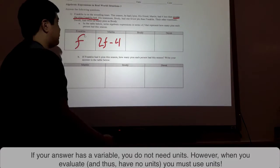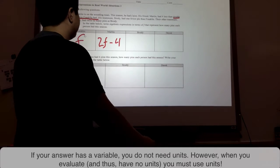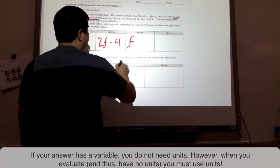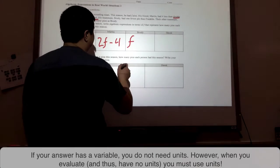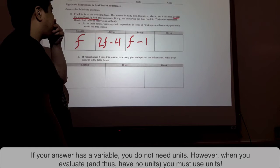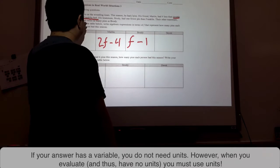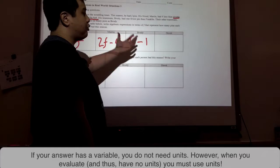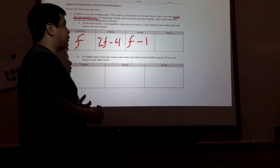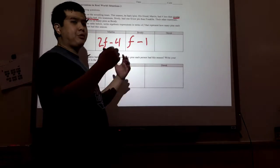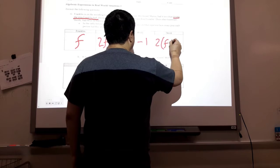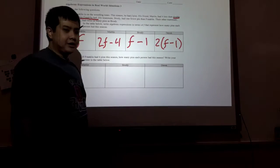Next, it says that Brody had one fewer pin than Franklin. So we go back to Franklin — Franklin had F. Therefore Brody had one fewer pin, which means F minus 1. Their other teammate Derek had twice as many pins as Brody, so we're going to multiply Brody's expression by 2. Remember, when we're multiplying a previously used expression we have to put it in parentheses because we are multiplying all of Brody's amount, giving us 2(F minus 1).